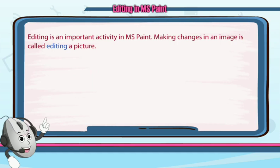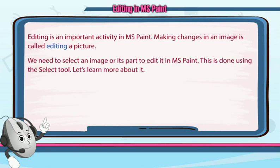Editing is an important activity in MS Paint. Making changes in an image is called editing a picture. Making changes in an image is called editing. You need to select an image to edit in MS Paint using the selection tool.